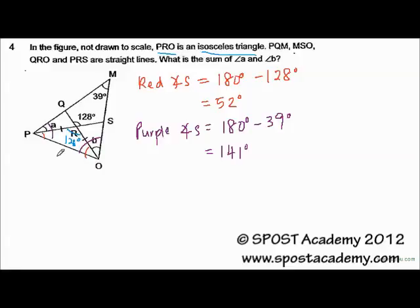Now the question is asking for angle A and angle B added together. So we just need to use the purple angles minus the red angles, which gives us the total sum of angle A plus angle B. This is equivalent to 141 degrees minus 52 degrees, which gives us 89 degrees.